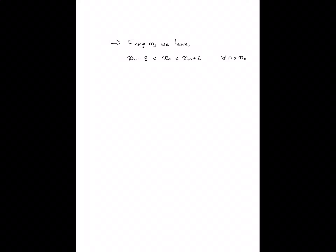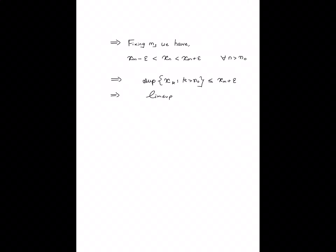The entire tail of the sequence is sandwiched between x_m + epsilon and x_m − epsilon. If you look at the supremum of the tail entries — every entry to the right of n_0 is less than x_m + epsilon — the supremum must be less than or equal to x_m + epsilon, since x_m + epsilon is an upper bound on those entries and the supremum is the least upper bound. This also implies that the limsup of the sequence is less than or equal to x_m + epsilon.